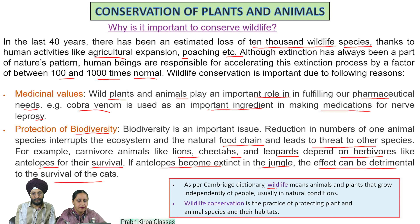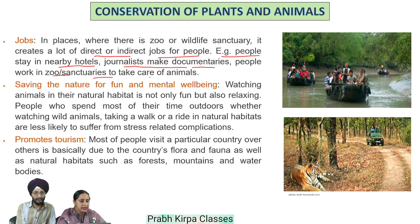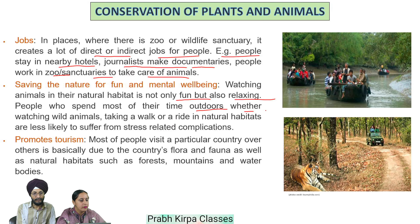As per the Cambridge Dictionary, wildlife means animals and plants that grow independently of people, usually in natural conditions. Wildlife conservation is the practice of protecting plant and animal species and their habitats. It is necessary to conserve wildlife for the protection of biodiversity. Reduction in numbers of one animal species interrupts the ecosystem and the natural food chain — for example, carnivore animals like lions, cheetahs and leopards depend on herbivores like antelopes for their survival. If antelopes become extinct, it can be detrimental to the survival of the cats. People who spend most of their time outdoors watching wild animals are less likely to suffer from stress-related complications.